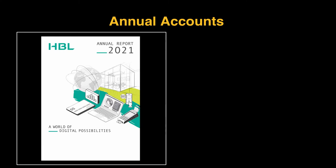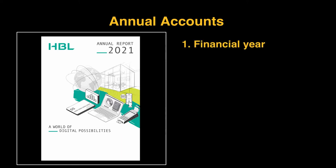First of all, they tell us this is an annual report for 2021. Whenever a business prepares their annual accounts, they always make them according to the financial year, not the calendar year. A financial year works a little bit differently — it will begin on the first of July of any year and it will end on the 30th of June of the following year.